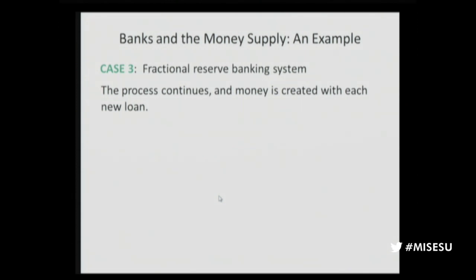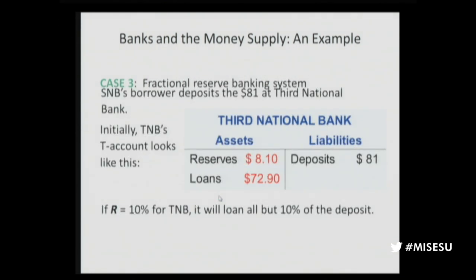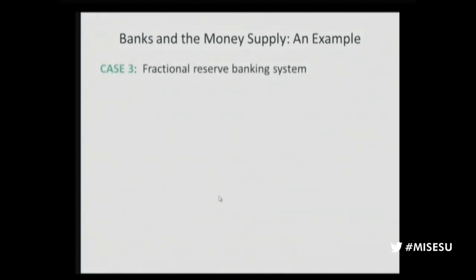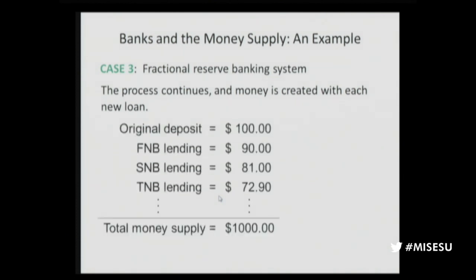You can see that banks themselves don't understand when economists say they create money, because each individual bank says 'I just loaned out what was deposited.' But the system as a whole creates the new money — the fractional reserve banking system creates the new money. This analysis was first really elaborated in 1915 by American economist Herbert Davenport, and then developed in the 1920s by C.A. Phillips, who also wrote an Austrian-oriented book explaining the Great Depression. So the Austrians were instrumental in developing this important analysis.